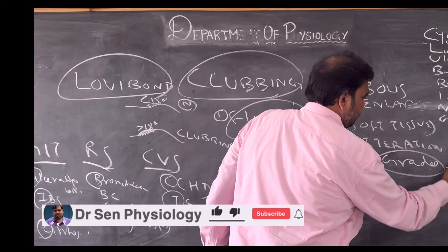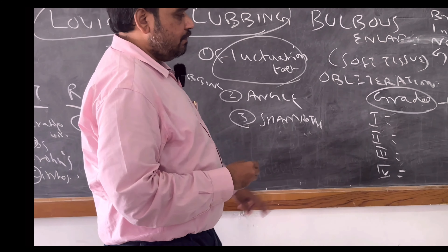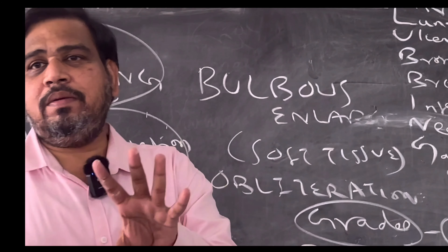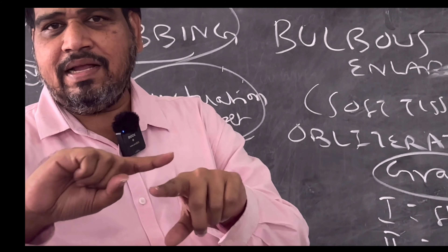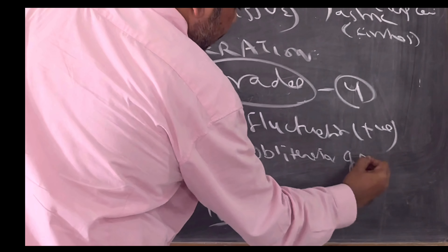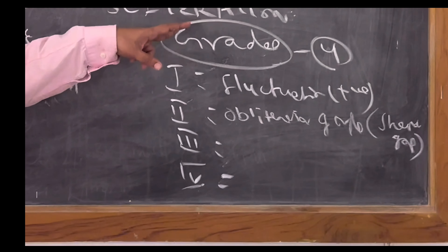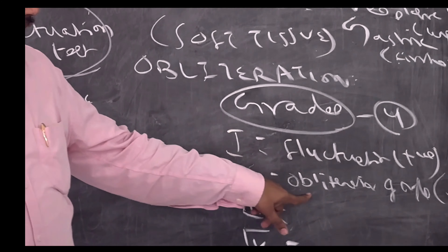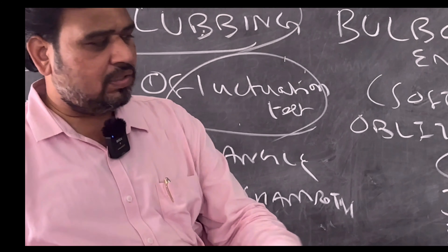Grade 1 clubbing: fluctuation test is positive, or there is bulbous enlargement of soft tissue. Grade 2: apart from bulbous enlargement, the angle between nail and nail bed is obliterated — the Schamroth diamond-shaped gap will not be present because the soft tissue is more on both sides and they meet. Grade 3: still more soft tissue, and there will be parrot beak appearance or drumstick appearance of the nail bed.